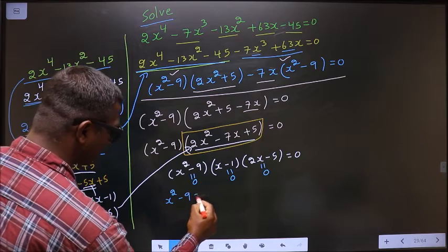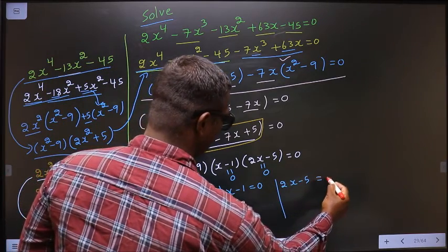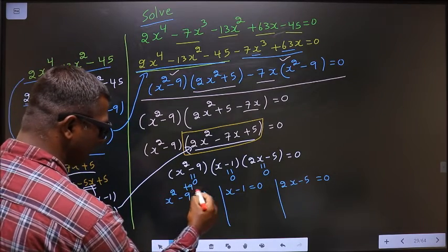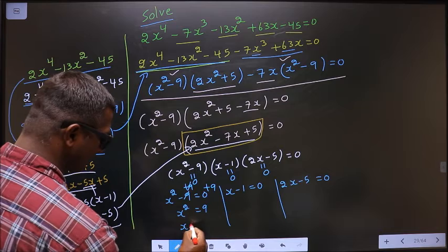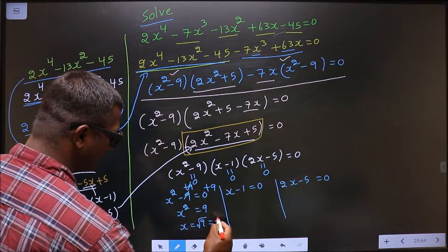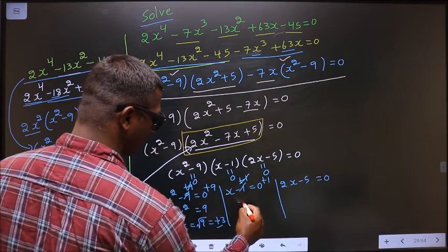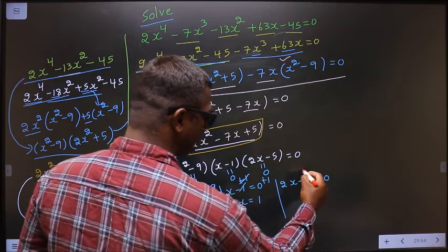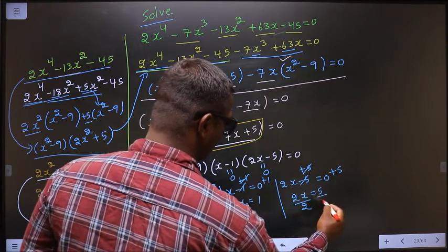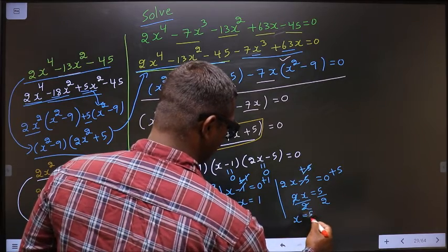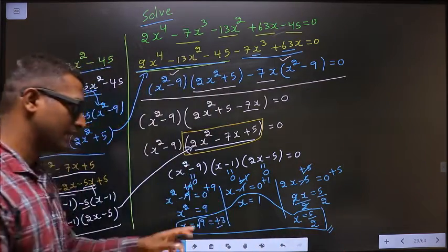When x² - 9 = 0, adding 9 on both sides gives x² = 9, so x = ±3. When x - 1 = 0, adding 1 on both sides gives x = 1. When 2x - 5 = 0, adding 5 on both sides gives 2x = 5, then dividing by 2 gives x = 5/2. So the x values are ±3, 1, and 5/2. This is our answer.